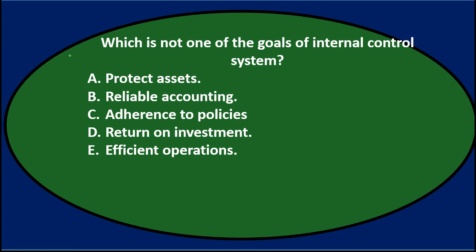We'll read through the question and see if we can cross any out with the process of elimination. The question is: which is not one of the goals of an internal control system? A. To protect assets — the internal control system typically achieves positive objectives, and protecting assets would be one of the core things we want to do. So it's not that one.